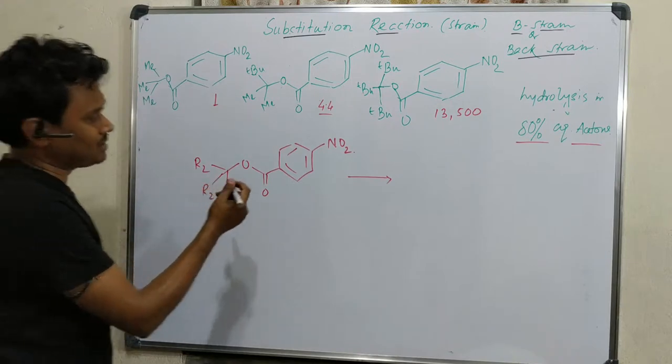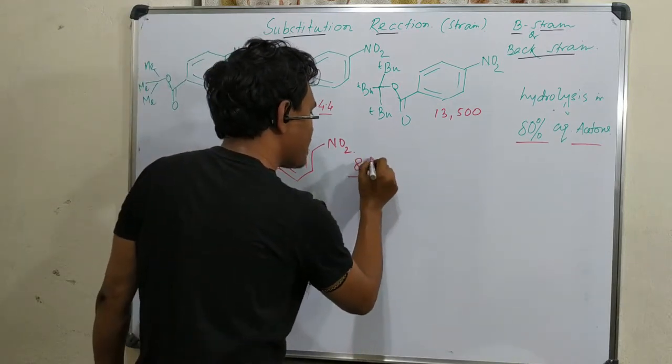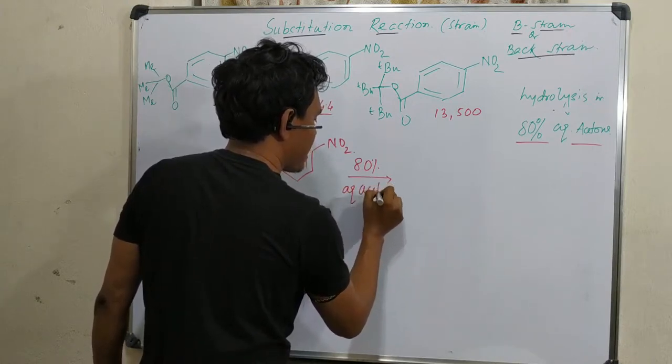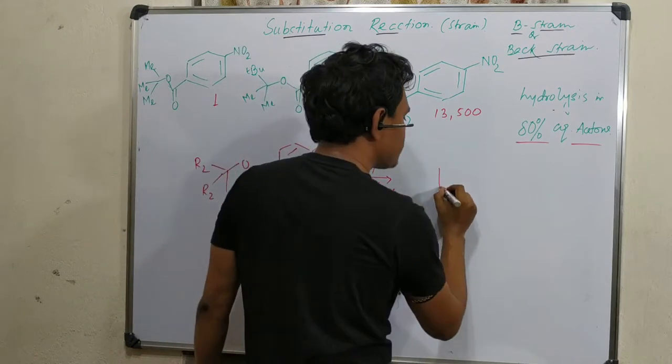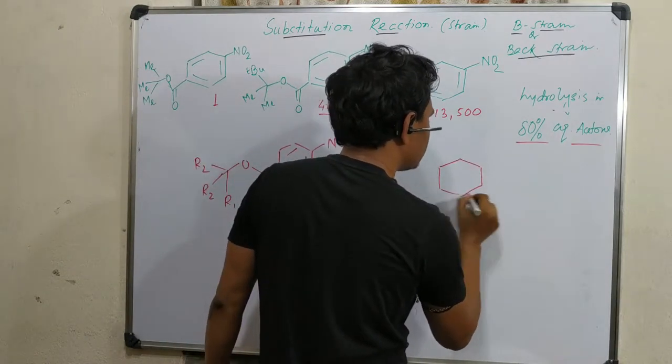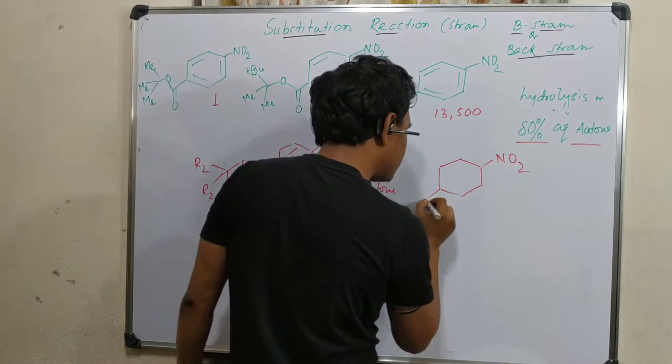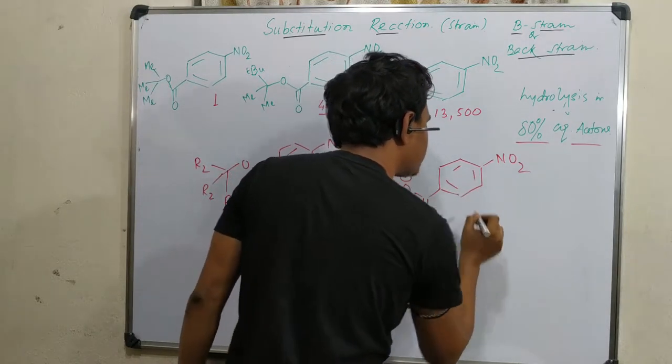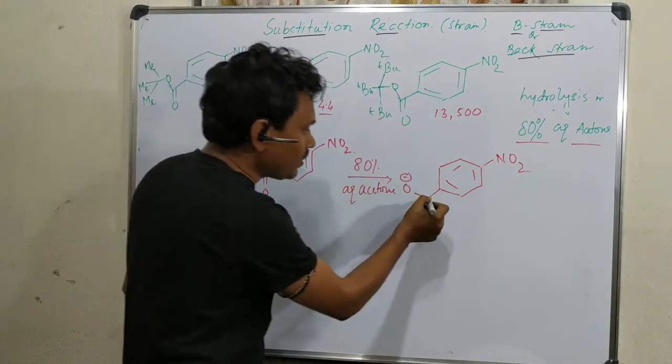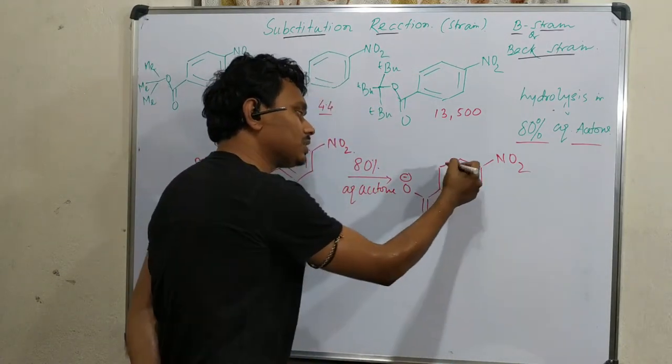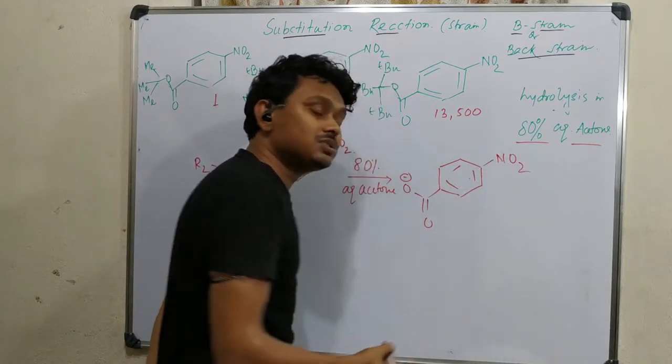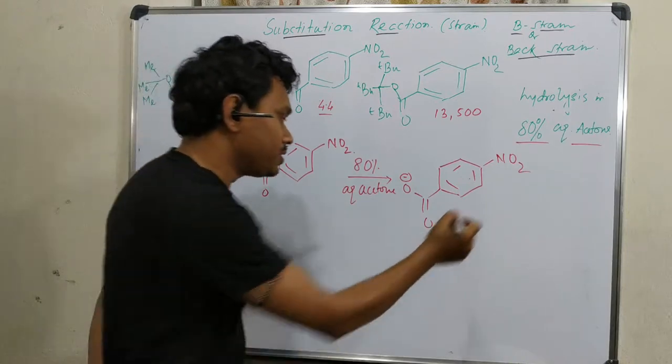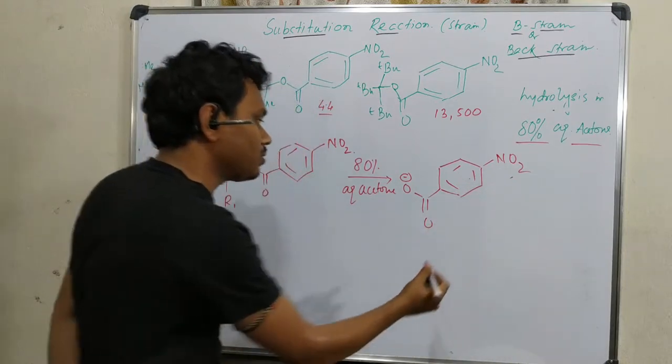Here this hydrolysis is happening in presence of 80% aqueous acetone. What is actually produced? In this reaction the product is nitrobenzoate, or more specifically paranitrobenzoate. Why this is chosen? Because this benzoate is stable due to the resonance with this ring. Additionally, this nitro group also helps to stabilize the charge. That is the main point of taking this paranitrobenzoate, or in short we can write this as PNB.